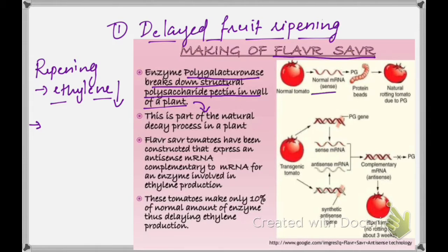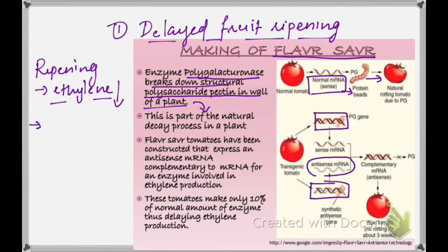Let us see here: this shows normal mRNA production leading to the production of PG (polygalacturonase), and that leads to the ripening of the tomato. What we do is take the same gene and introduce it in such a way that it produces a special RNA. These two RNAs form a hybrid RNA, and thus we can reduce the production of PG and thus reduce the ripening of the tomato. This technology is known as anti-sense mRNA.